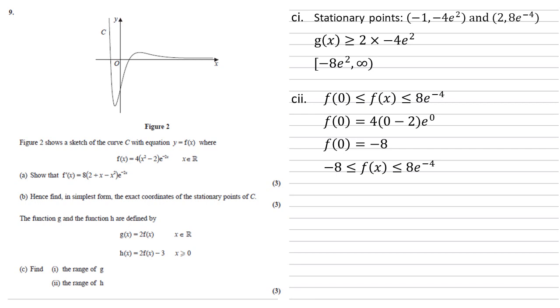h of x is 2 times f of x minus 3. So for each of our bounds on the left and the right, if we double them and take away 3, we then get that h of x lies between minus 19 and 16e to the minus 4 minus 3. So our range is these two values, but in square brackets because it can equal them. So minus 19 and 16e to the minus 4.